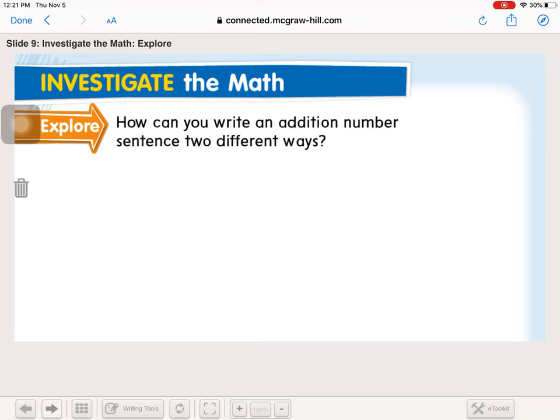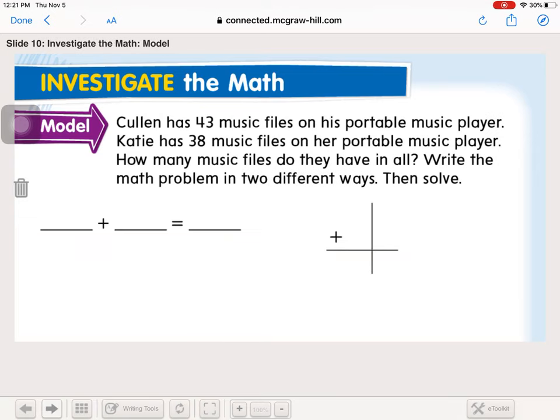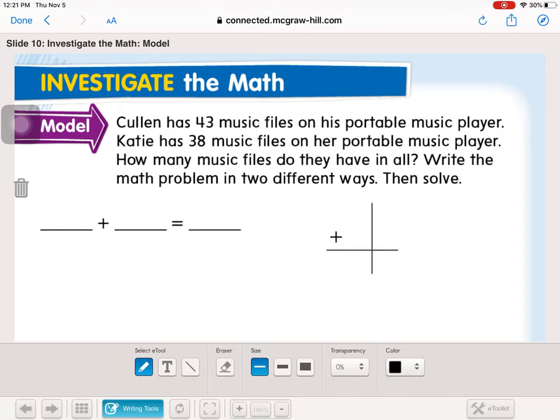So now we're ready to explore. It says, how can you write an addition number sentence two different ways? So we're going to look at this on the next page. It says, Colin has 43 music files on his portable music player. Katie has 38 music files on her portable music player. How many music files do they have in all? That means we're adding.